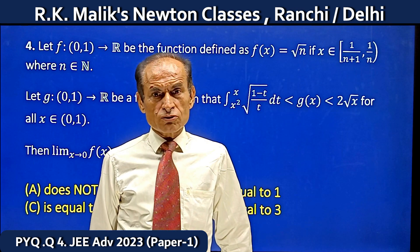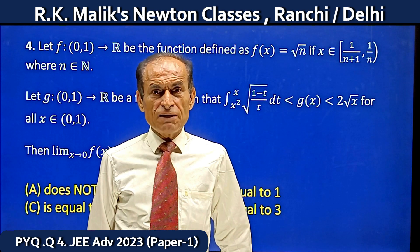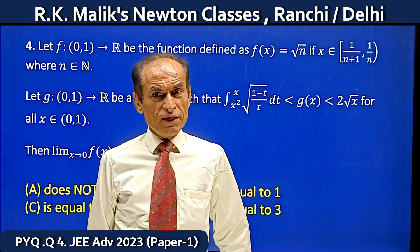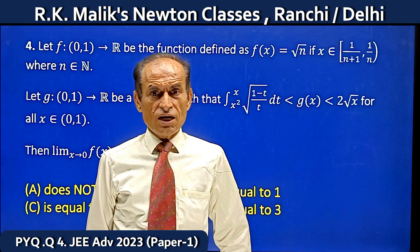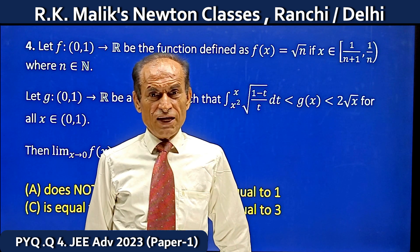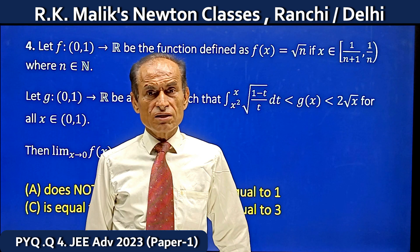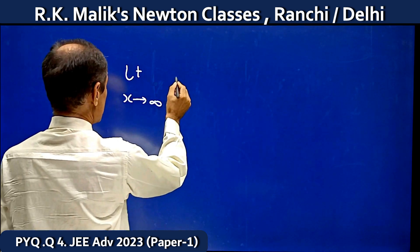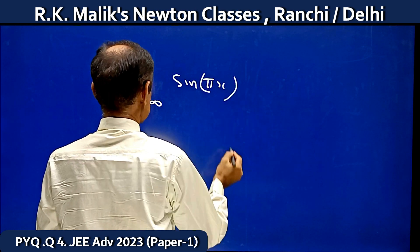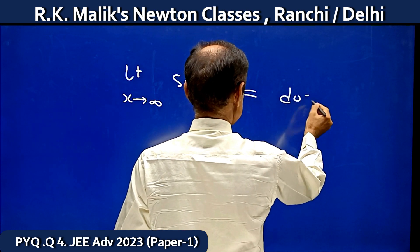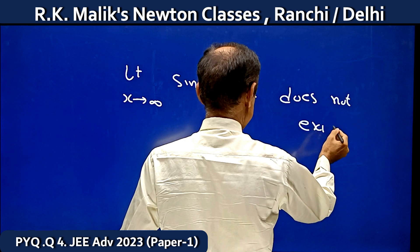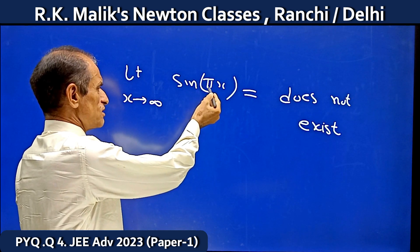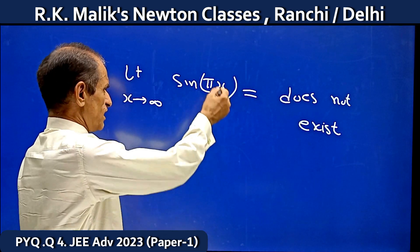In this question, most students make a mistake. That mistake is not creating any problem here, but because the concept is wrong, it may give you the wrong answer in some other question. I am going to tell you the mistake, but the explanation will be given while solving the question. If I say limit x tends to infinity of sin(πx), it clearly does not exist. You must have studied this even at board level — the limit does not exist as x tends to infinity, that is when πx tends to infinity.